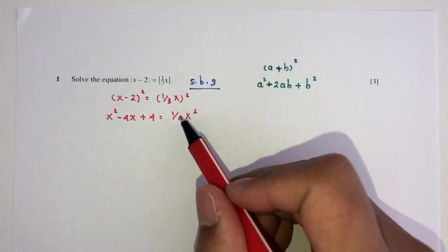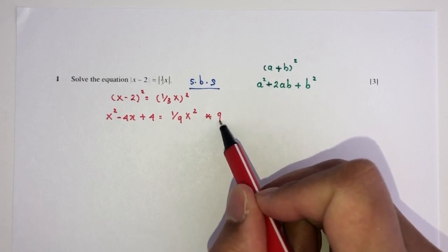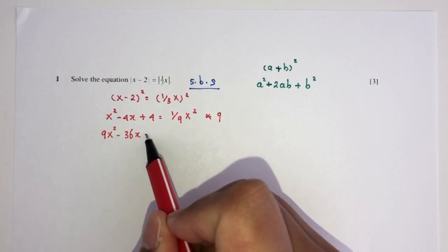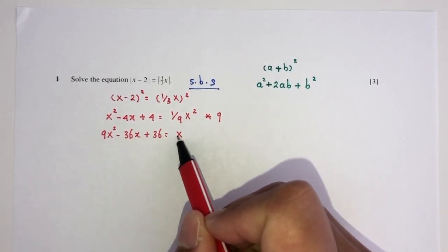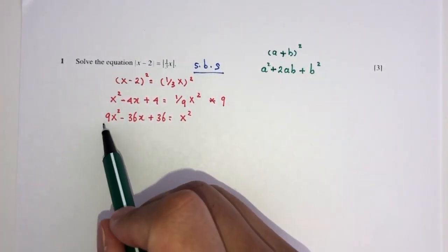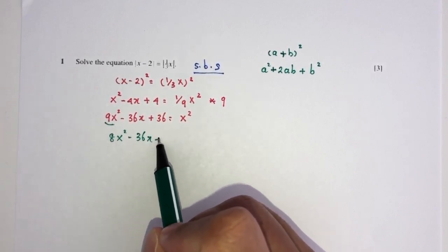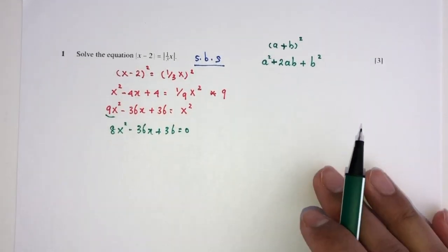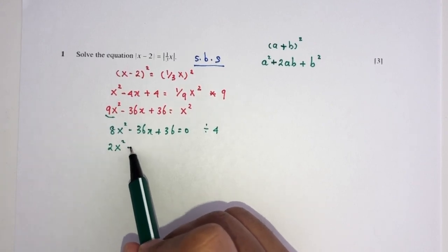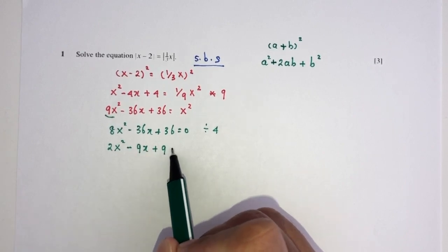I don't like to work with fractions. So I can simplify by multiplying everyone by 9. You will have 9x squared minus 36x plus 36 is equal to x squared. Now, sending everything to one side, you will have 9 minus 1 which gives 8x squared, minus 36x plus 36 equals 0. Simplify by dividing by 4 everywhere, and you will have 2x squared minus 9x plus 9 equal to 0.